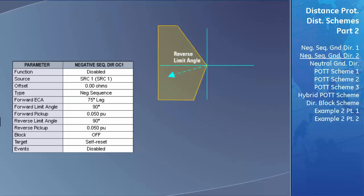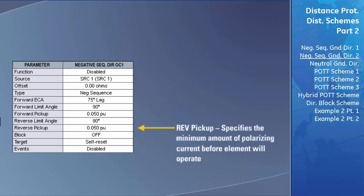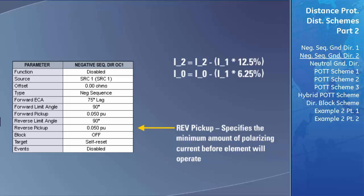Making the reverse limit angle less than 90 degrees means the polarizing current needs to be much closer to the reverse element characteristic angle for the ground current to be recognized as flowing in the reverse direction. The reverse pickup setting defines the minimum amount of zero sequence or negative sequence current needed before the element turns on the negative sequence directional overcurrent flag. A small portion of positive sequence current is subtracted: 12.5% for negative sequence current and 6.25% for zero sequence current, before using these values for protection calculations.